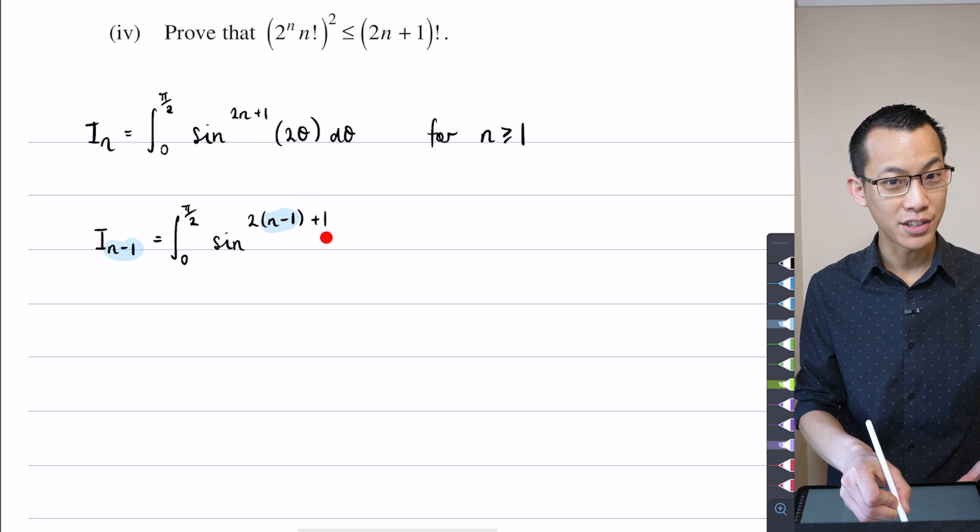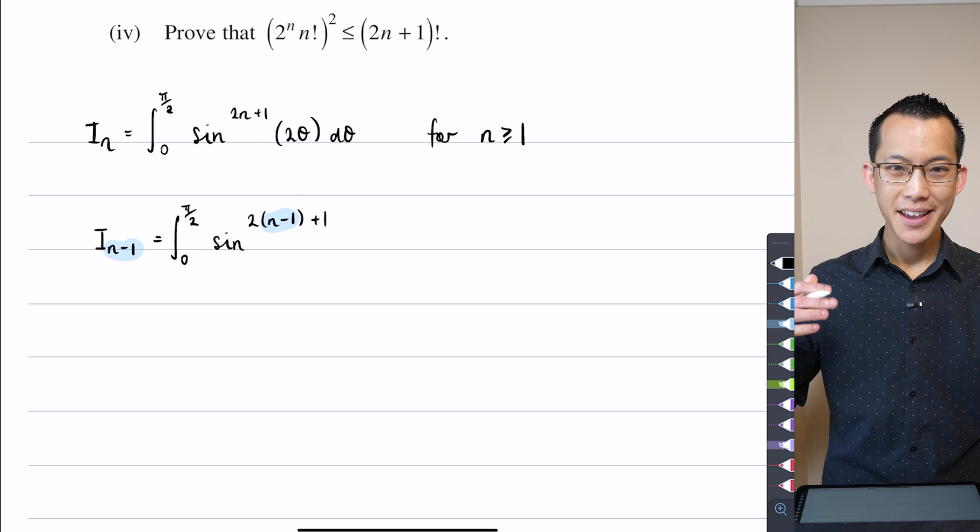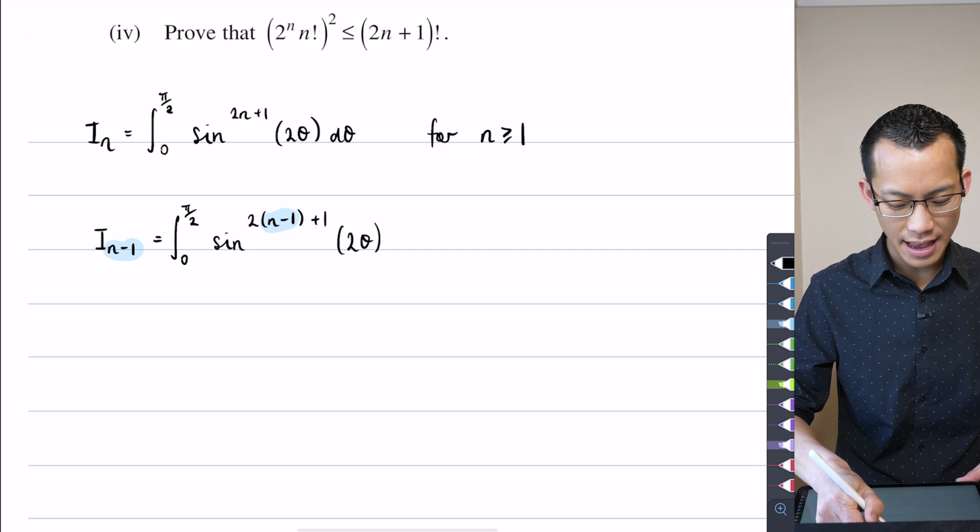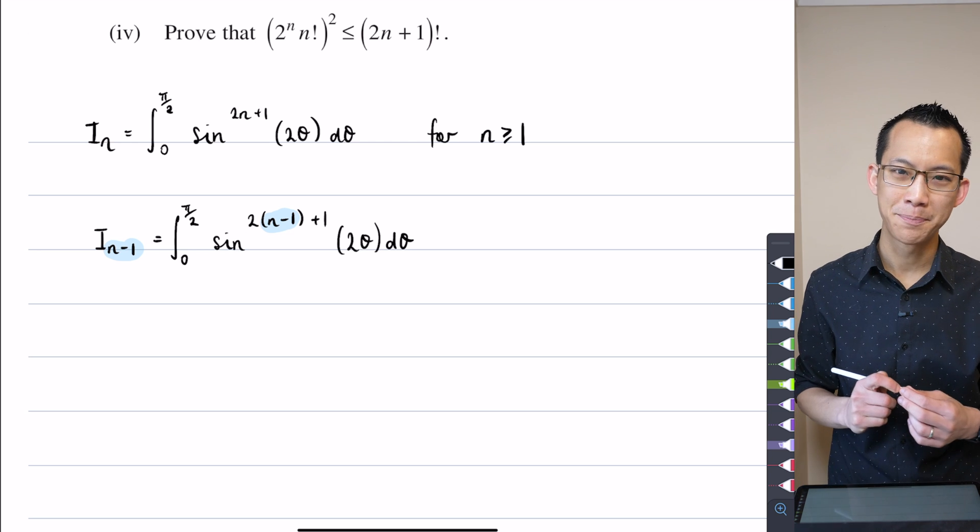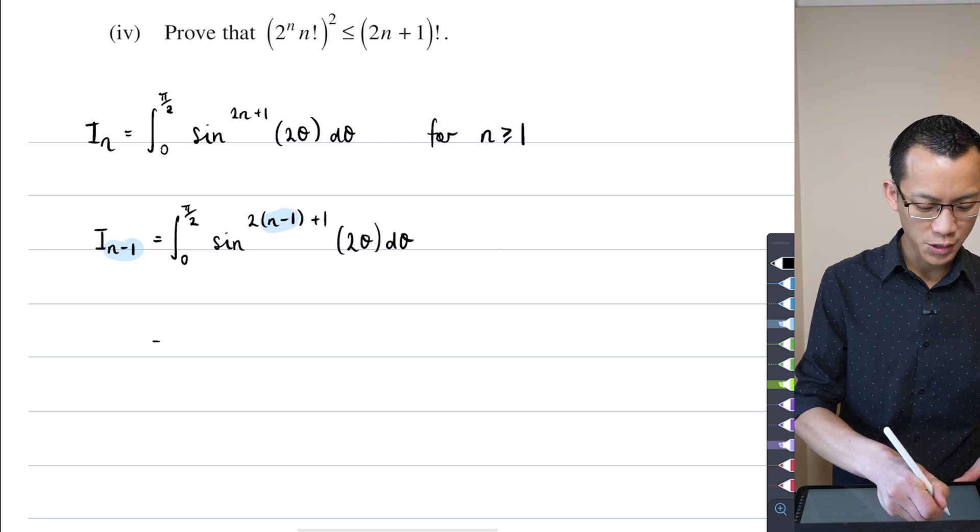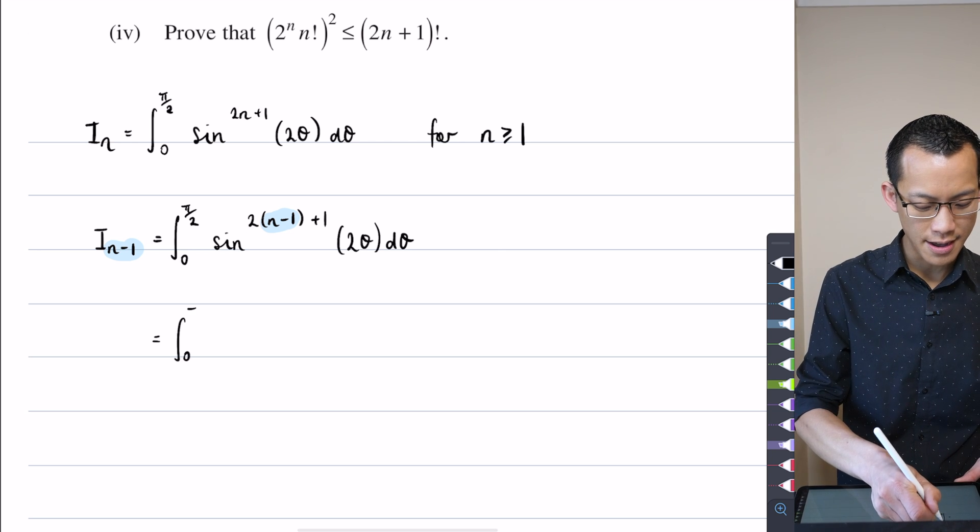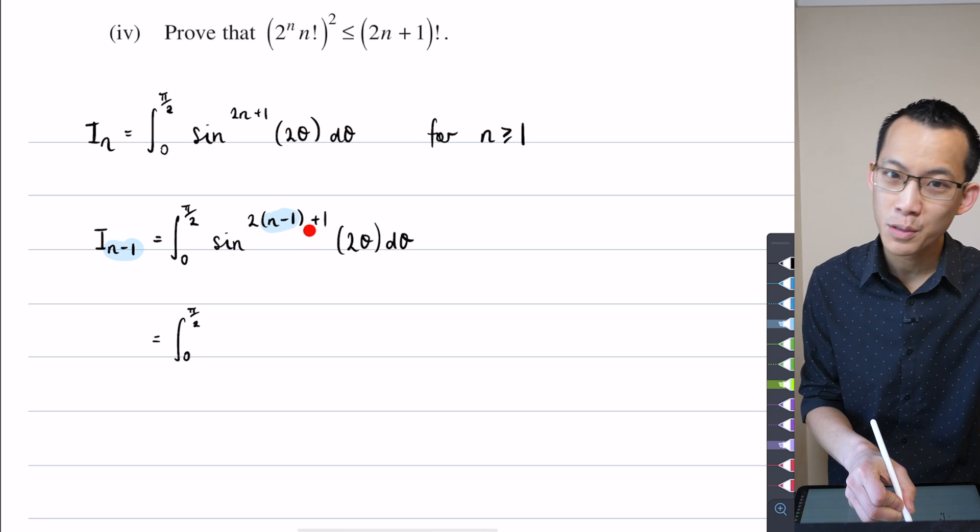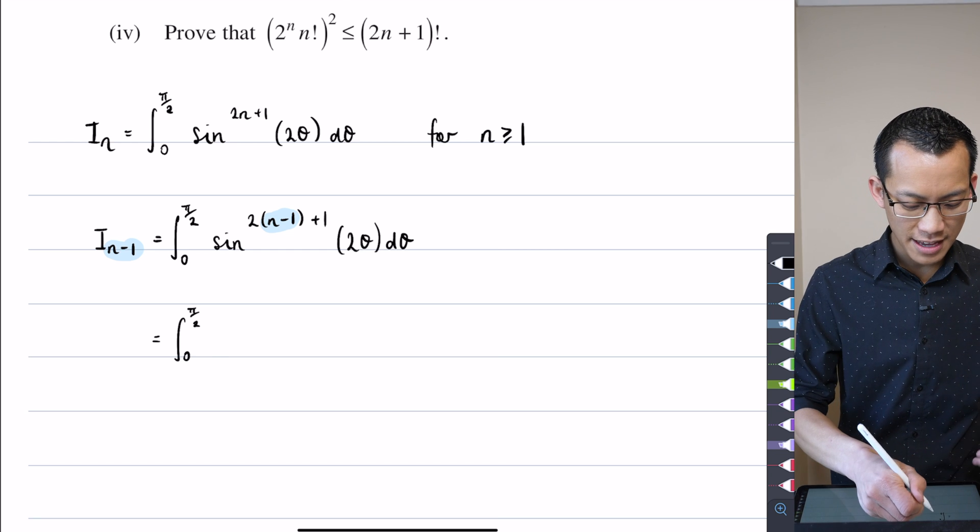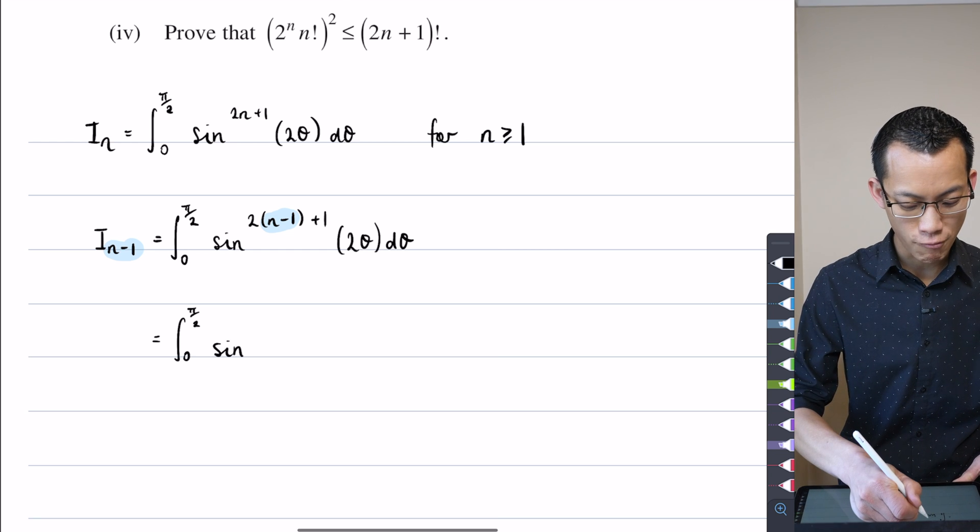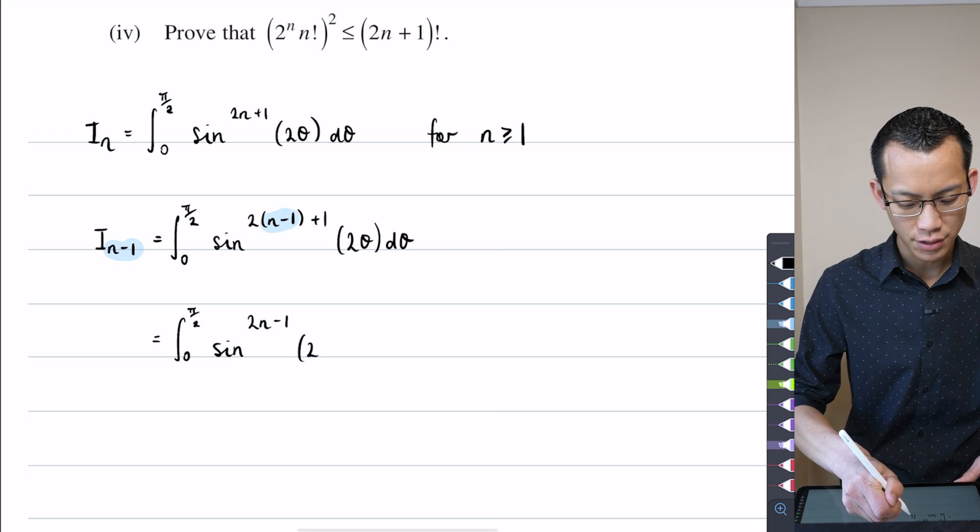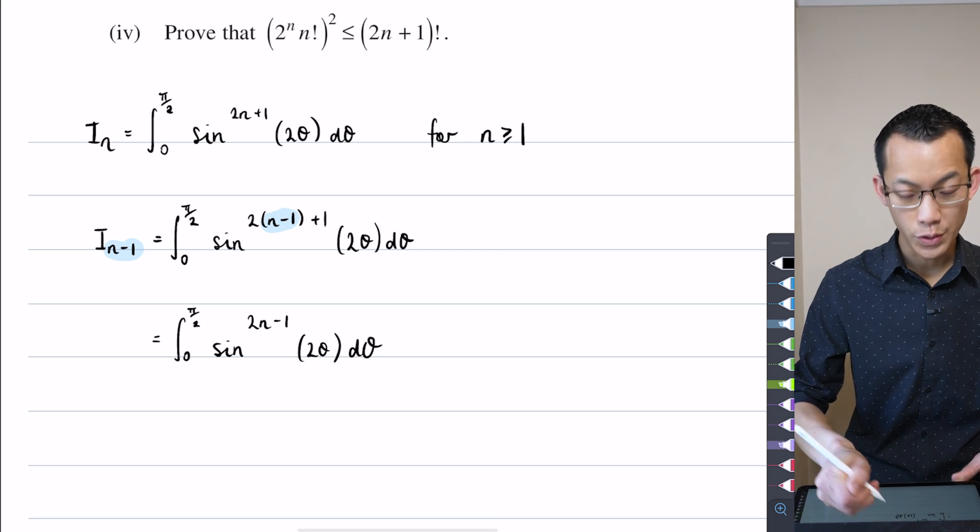so it's just going to stay as 2θ, and then you integrate it with respect to theta. Now hopefully it isn't too rough to see, we can just tease this out a teeny bit more by recognizing that's 2n-2, you add 1, so that's going to leave me with sine raised to 2n-1 of 2θ, with respect to theta.